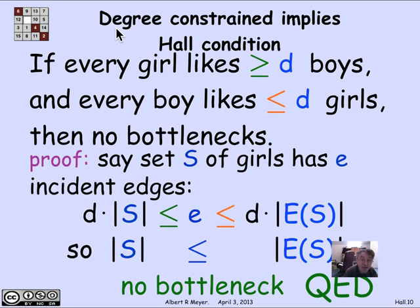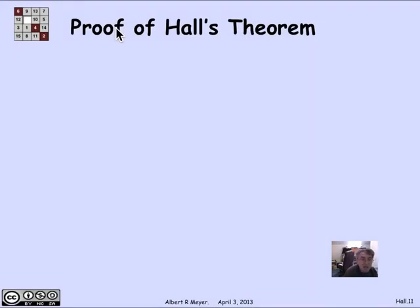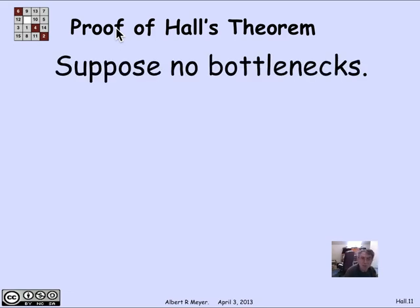By Hall's theorem, the degree-constrained condition is sufficient to guarantee that there is a match. Note that there are many graphs with matches that are not degree-constrained — this is not an if-and-only-if theorem; it's just a sufficient condition that comes up often enough to be worth stating. Degree-constrained implies Hall's condition is satisfied, which implies there's a perfect match. Let's now turn to the general case of Hall's theorem and prove it. Hall's theorem says that if there's no bottleneck, then there is a match. The strategy is to break the problem of finding a match for a large set into problems for smaller sets, then apply strong induction.